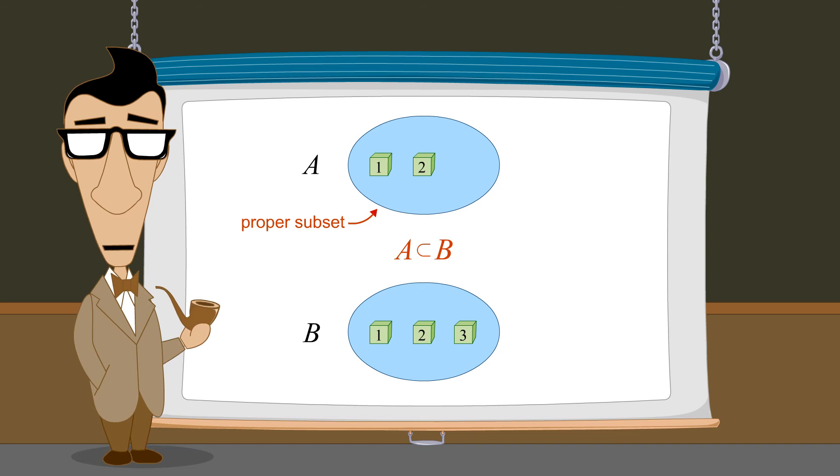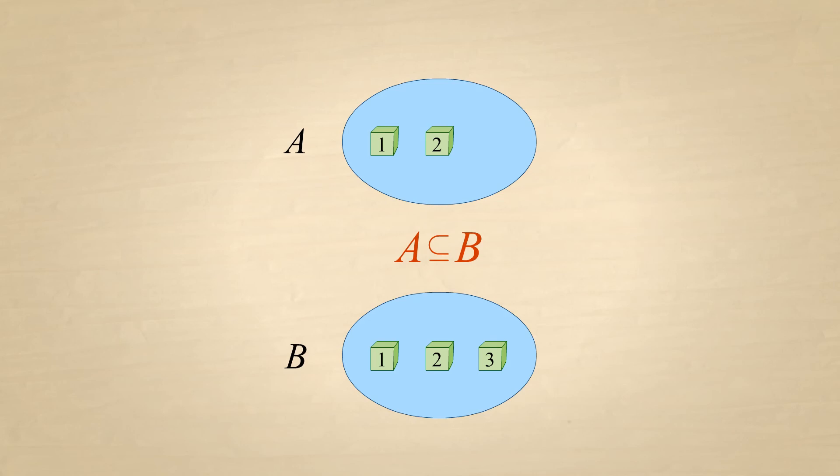In addition to the relation of subset, a set can also be a superset. In any case where set A is a subset of set B, we can also say that set B is a superset of set A. This relation is denoted using the superset symbol, which is the subset symbol reversed.